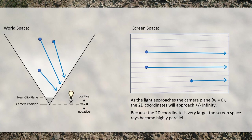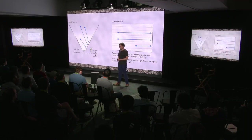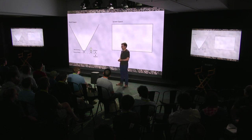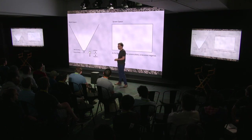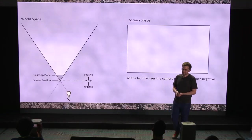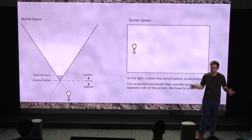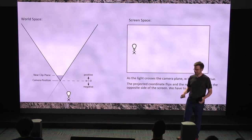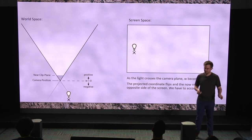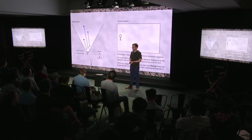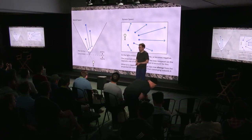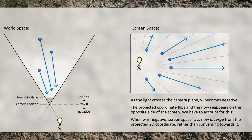The third interesting observation: what happens when things go beyond the camera plane? When we push the light behind the camera plane, W flips to being negative, and the light reappears on screen on the opposite side. Observation number three — the unintuitive one — is that we no longer interpolate towards the light; we interpolate away from it. This guarantees you're still tracing a correct ray in screen space. Knowing these three things, we can very easily implement our algorithm.